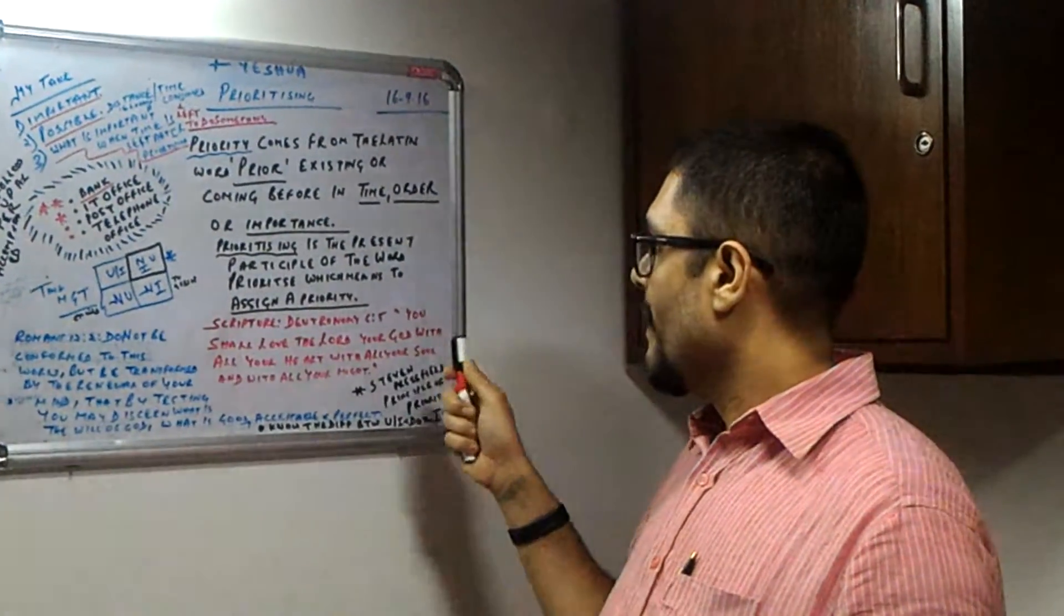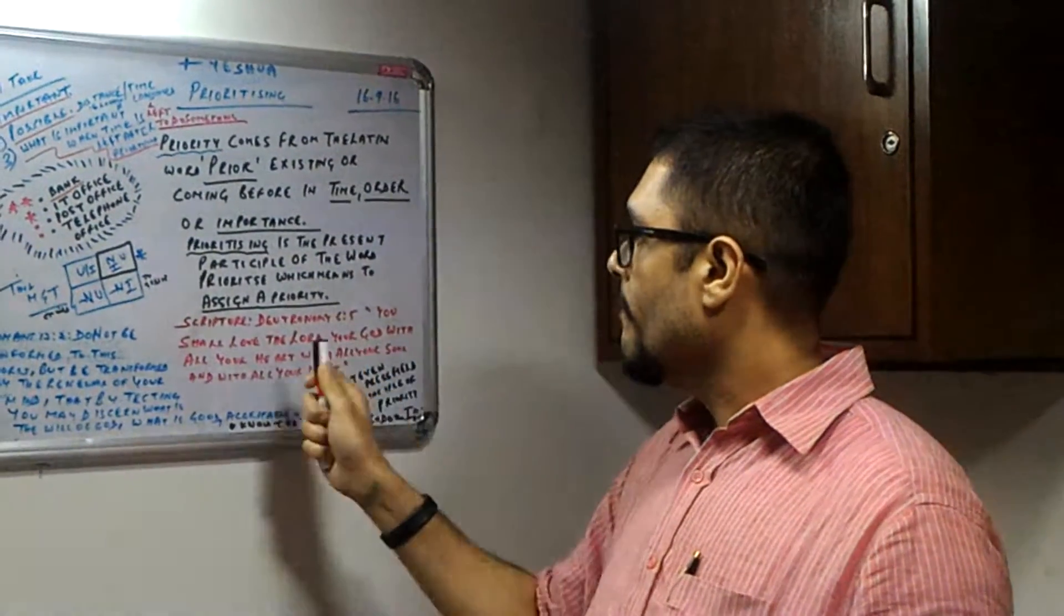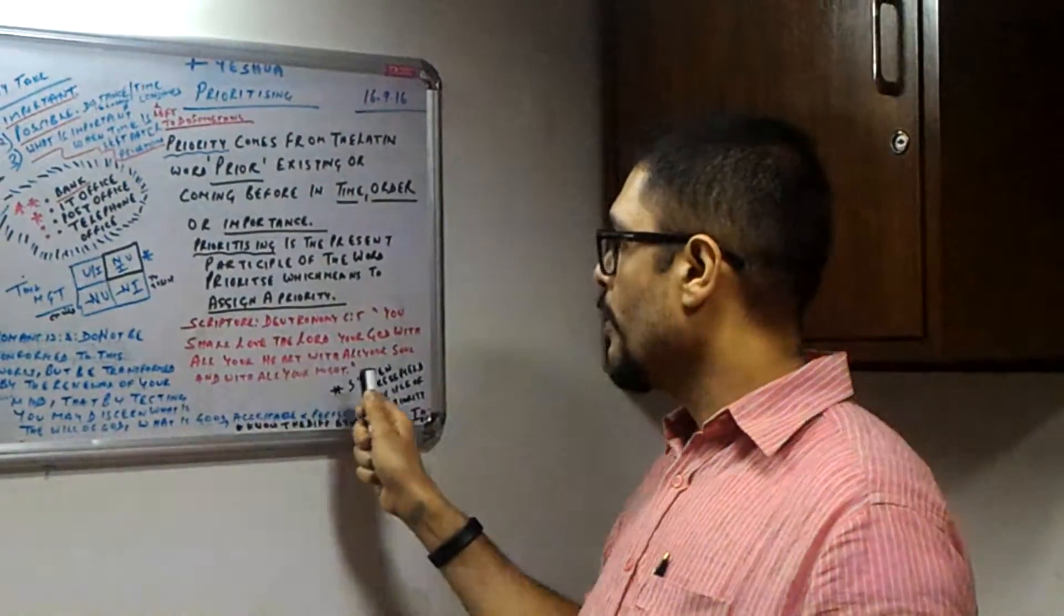In Deuteronomy 6:5, it says, you shall love the Lord your God with all your heart, with all your soul, and with all your might.